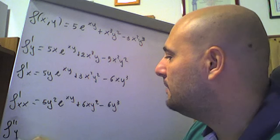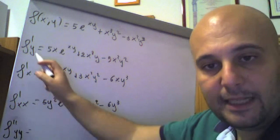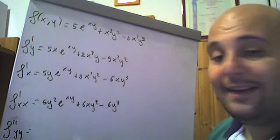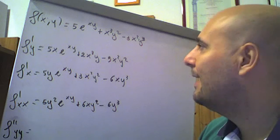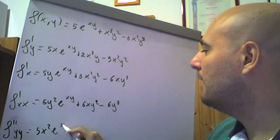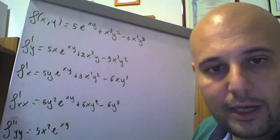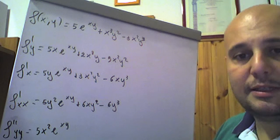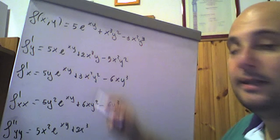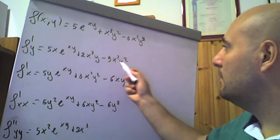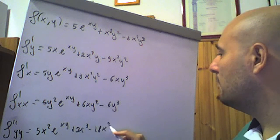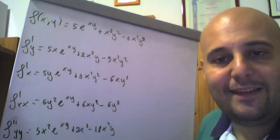f secondo di yy, ovvero derivata rispetto ad y della f primo rispetto ad y. Attenzione che anche qui 5x·e^(xy): 5x sta fuori, derivata di e alla xy rispetto ad y sarà x·e^(xy), quindi 5x²·e^(xy). Derivata rispetto ad y di 2x³y è 2x³ che sta fuori, derivata di y è 1, un 2x³. Infine derivata di y quadro è 2y, il meno 9x² sta fuori, meno 9x² per 2y è meno 18x²y. Ecco le derivate parziali seconde proprie.